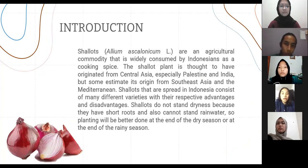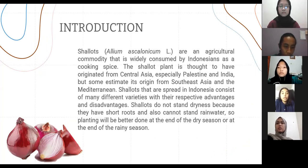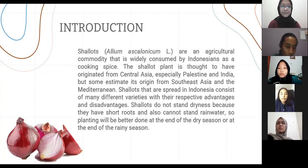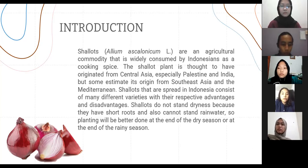Shallots are an agricultural commodity that is widely consumed by Indonesians as a cooking spice. The shallot plant is thought to have originated from Central Asia, especially Palestine and India, but some estimate its origin from Southeast Asia and the Mediterranean. Shallots bred in Indonesia consist of many different varieties with their respective advantages and disadvantages. Shallots do not stand dryness because they have shallow roots and also cannot stand rainwater, so planting will be better at the end of the dry season or at the end of the rainy season.